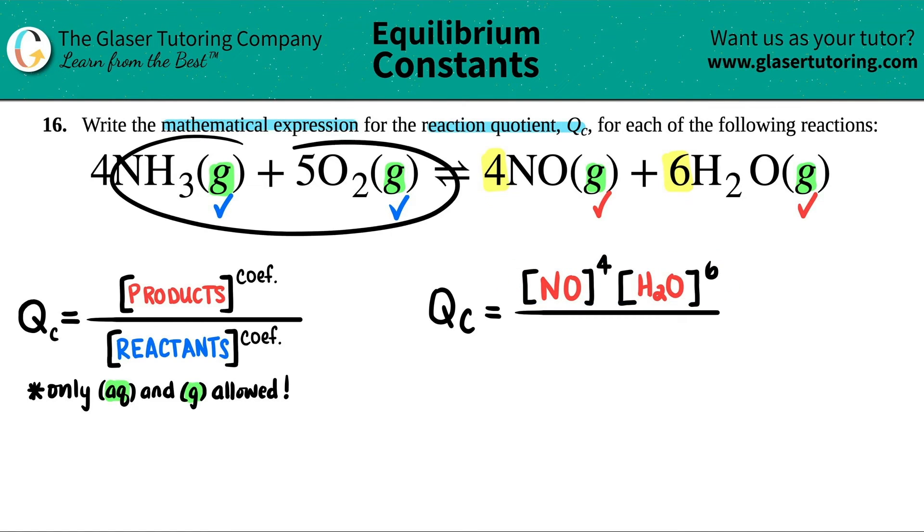Now let's do the two reactants. So working from left to right, I'm going to put brackets NH3. Close that bracket. And now what was the coefficient? Oh, there was four NH3s. So I have to put a four in the top.